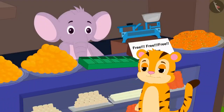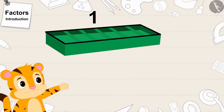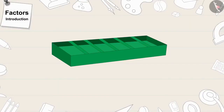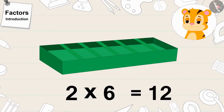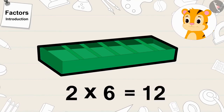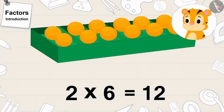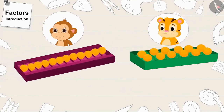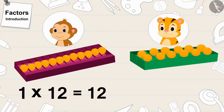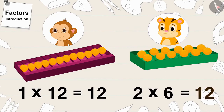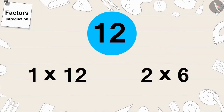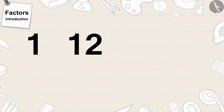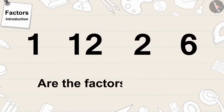Now, Sheer Khan gave his box to Appu. There is one vertical line in Sheer Khan's box and 6 slots. Will Appu be able to keep 12 laddus in Sheer Khan's box? Yes, 2 times 6 is 12, so laddus can be kept in Sheer Khan's box. In Babban's box there are 1 times 12 laddus, and in Sheer Khan's box there are 2 times 6, that is 12 laddus. We can write 12 as 1 times 12 or 2 times 6. So, 1, 12, 2 and 6 are the factors of 12.